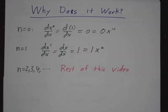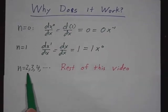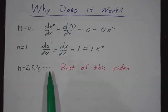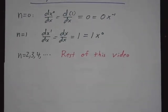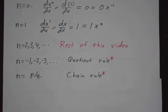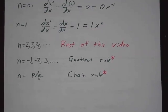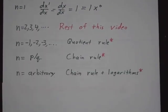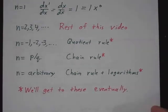And for any other positive integer, that's what we're going to spend the rest of this video on, seeing why it works for n equals 2, 3, 4, 5, 6, and so on. But that's not the end of the story. It also works for negative integers. And when we learn about the quotient rule, we'll see why. It also works for fractions. And when we learn about the chain rule, we'll see why. And it also works for arbitrary n. Like if we talk about x to the pi or x to the square root of 2, it still works. For that, we're going to need logarithms. So we're not going to get to those for a while. But when we learn about quotient rule and chain rule and logarithms, we'll go back and we'll see why Newton's hammer works in those cases as well. So we'll get there eventually.